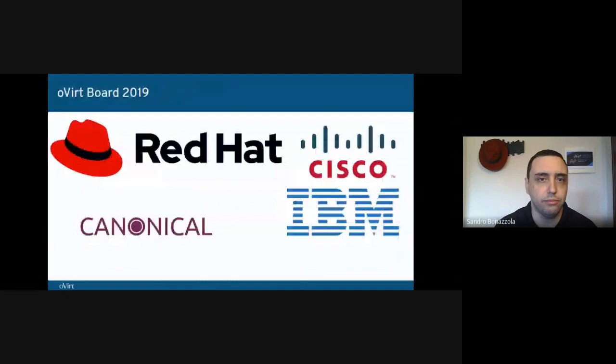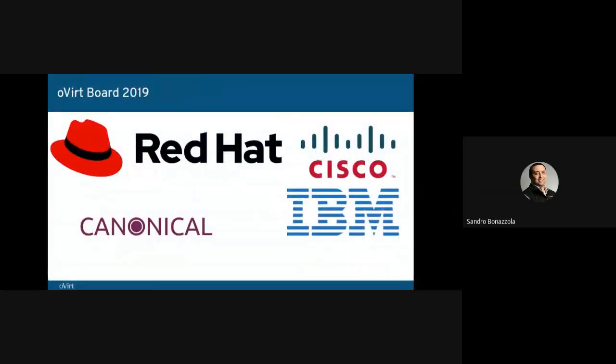The project is governed by a board with the role of coordinating and helping ensure smooth running of the oVirt project. The board also facilitates cross-project architectural coordination and communication between projects to resolve release schedule or integration issues. When we met last year in Rome, the oVirt board included members from Red Hat, Cisco, Canonical, and IBM.